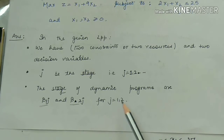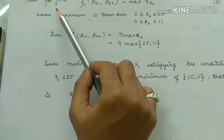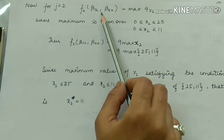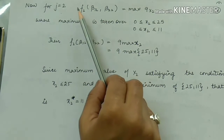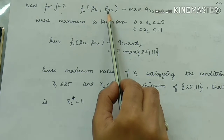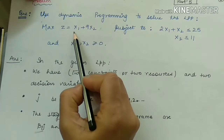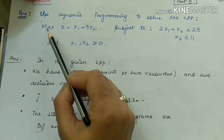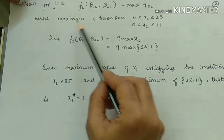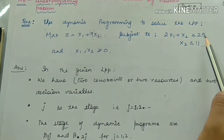So β1J and β2J for J equal to 1 and 2 are dummy states. Now let us start for stage 2, where J equals 2. We have to write a functional equation: F2(β12, β22). The right-hand side is obtained from the objective function — we write the value of x2, which is 9x2. So I have written max 9x2, and now we have to find the values of x2 to obtain the optimal value.